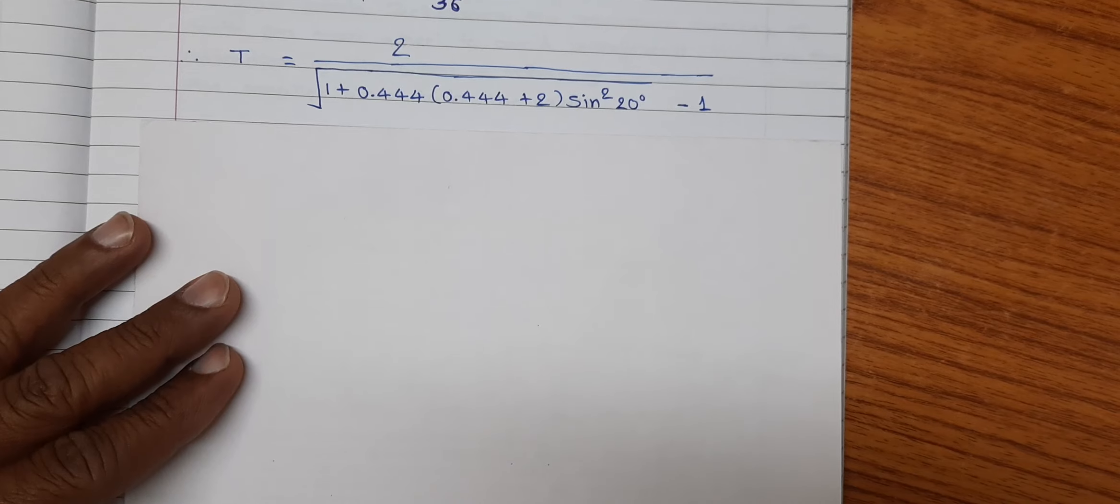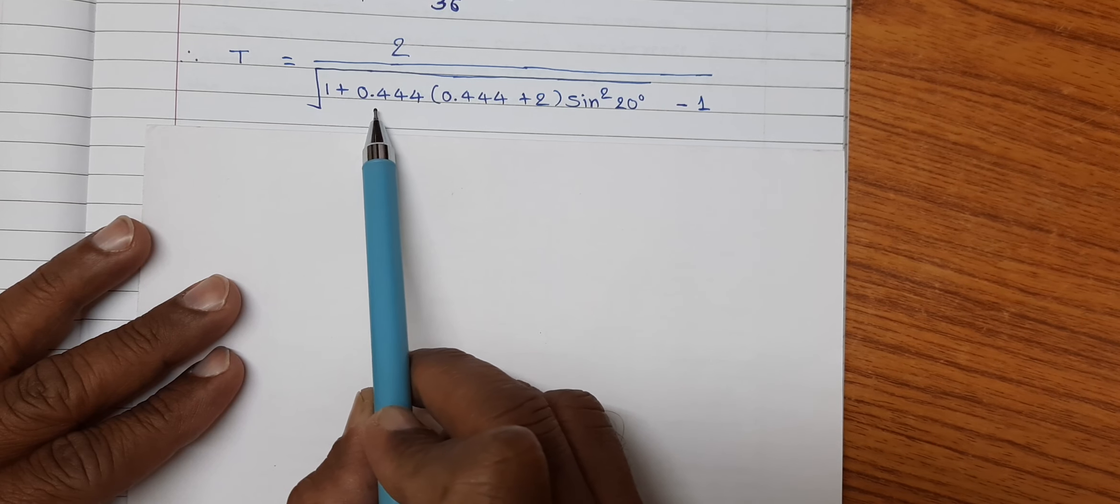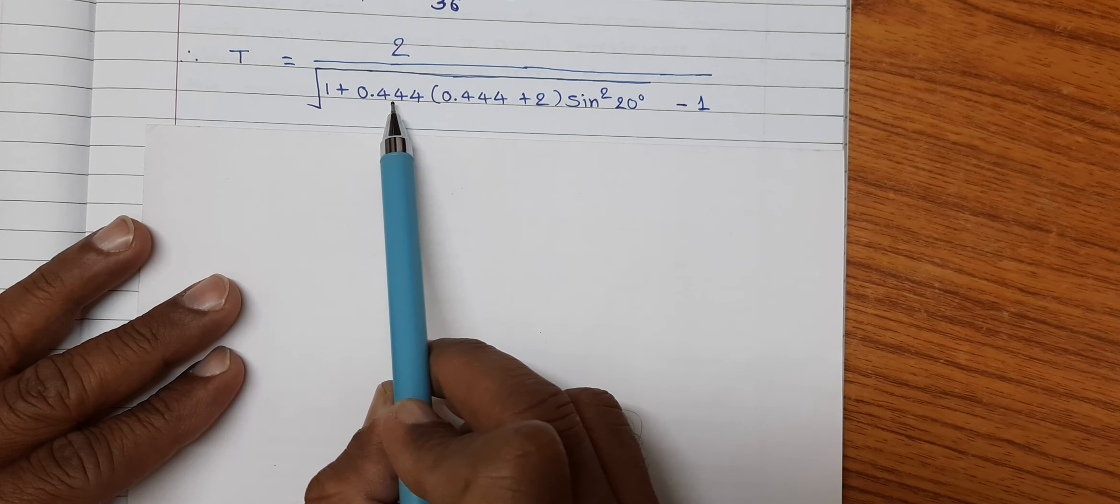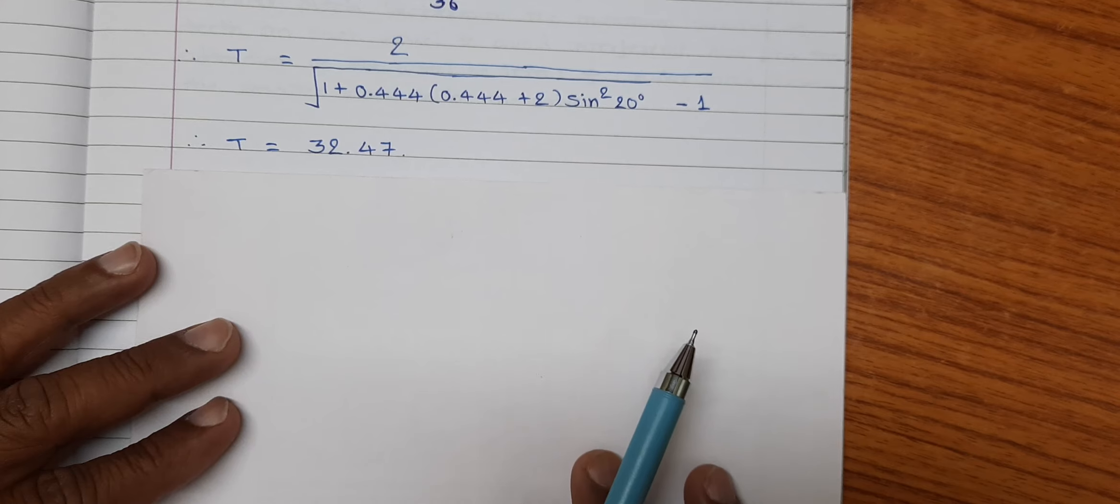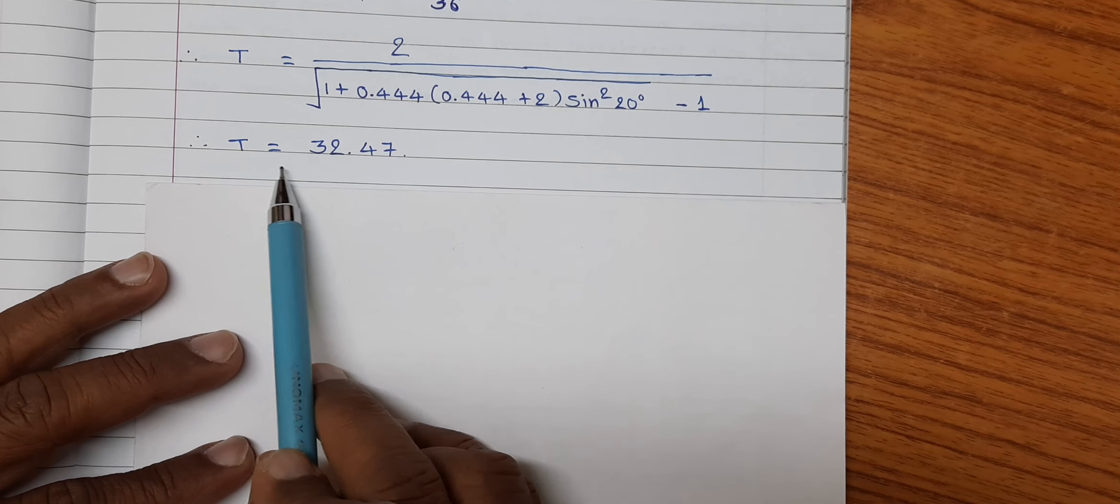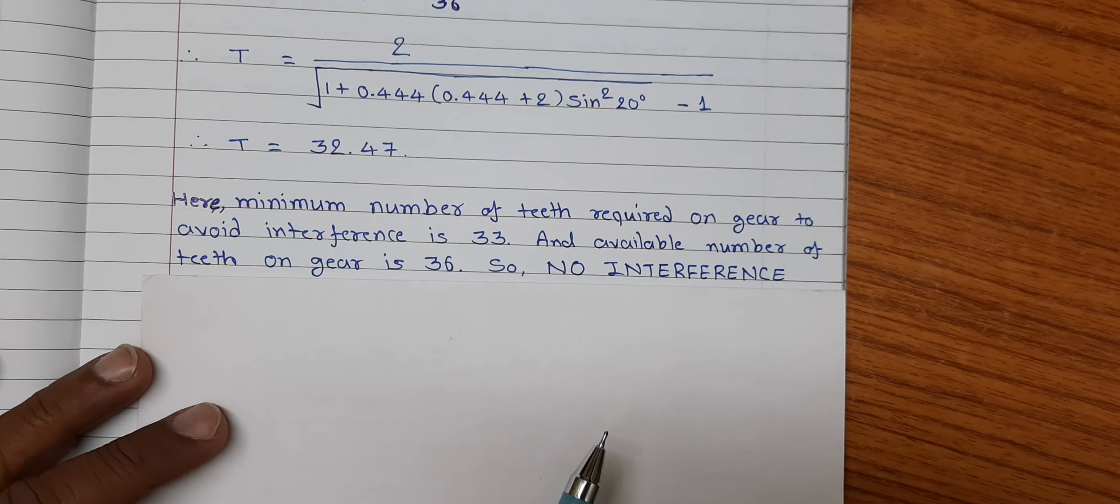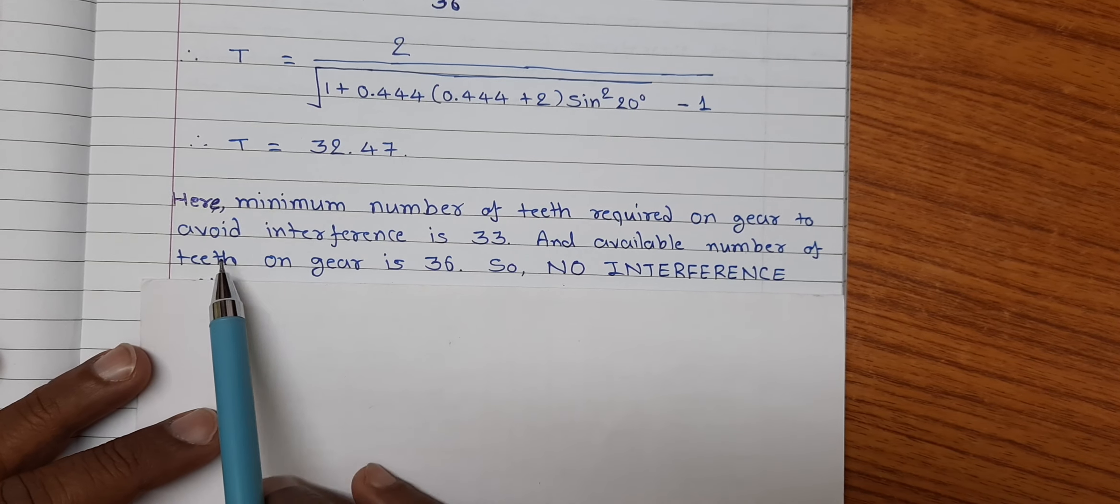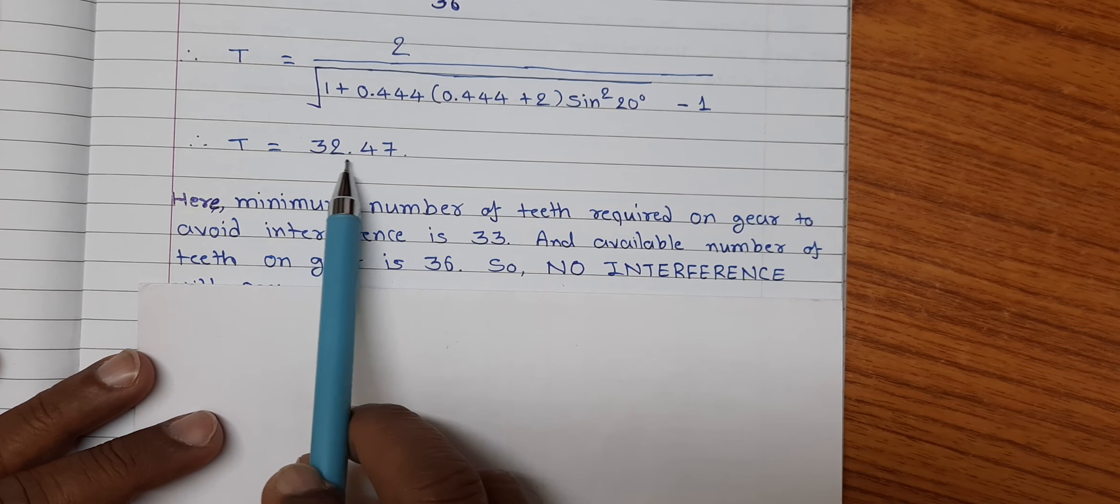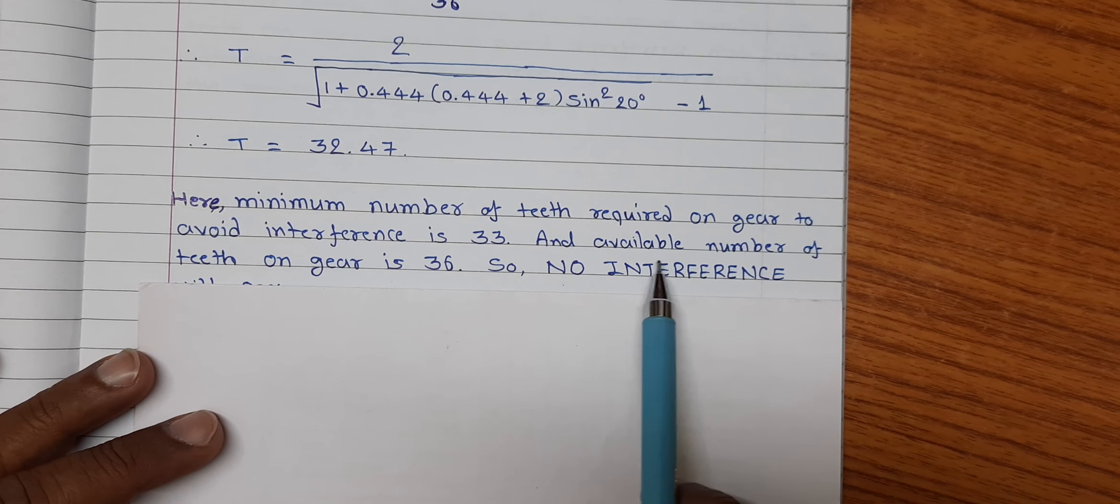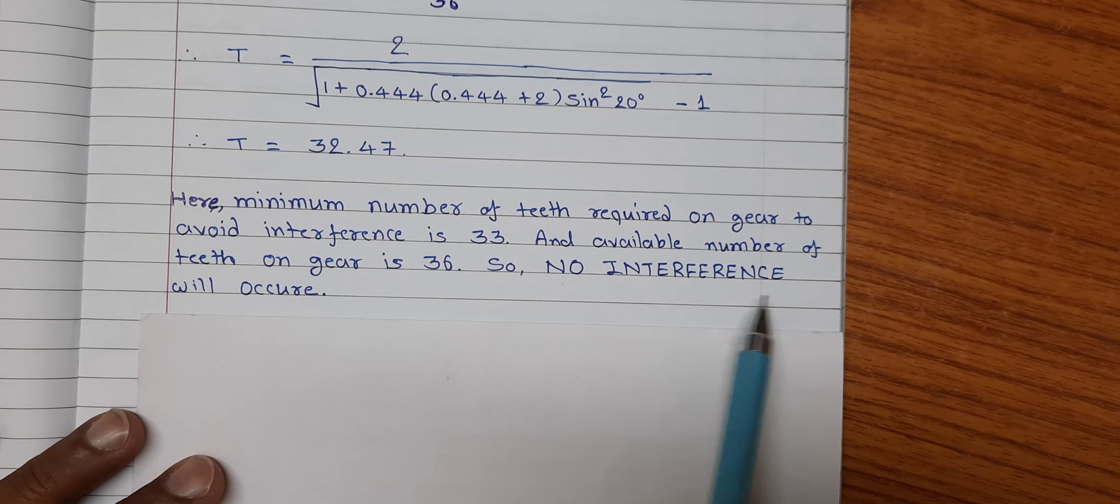So, substituting this value in the equation of minimum number of teeth that t is equal to, putting 1 upon g is 0.444 and phi is equal to 20 degree. And on calculation, we found minimum number of teeth t is equal to 32.47. Here, minimum number of teeth required on the gear to avoid interference is 33. And available number of teeth on gear is 36. So, no interference will occur.